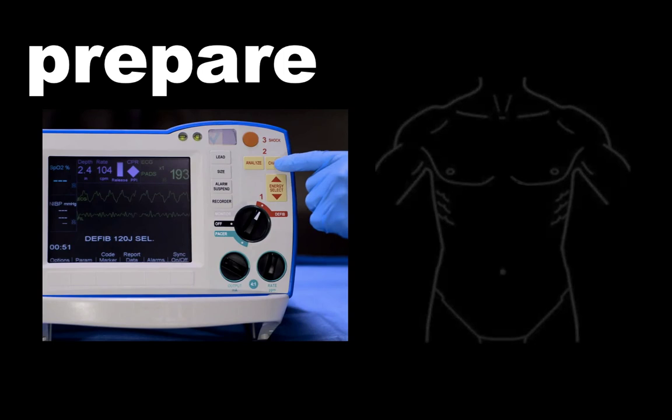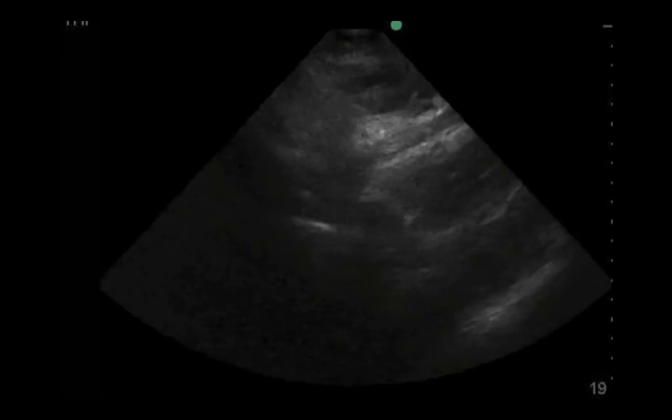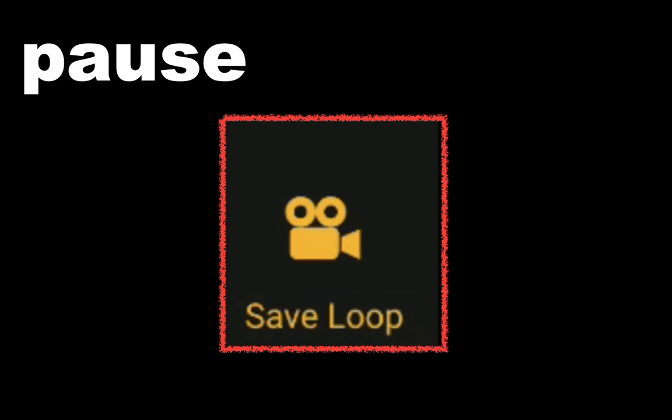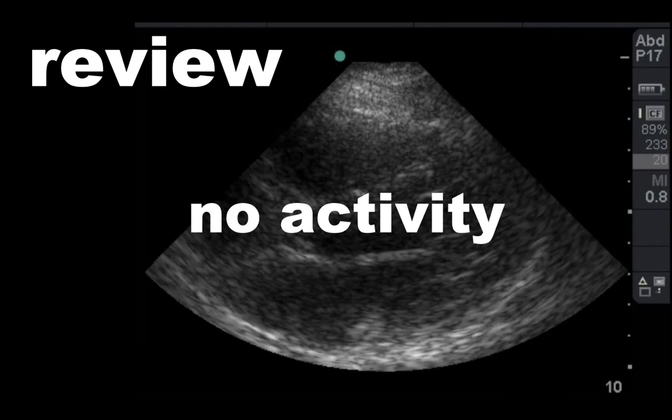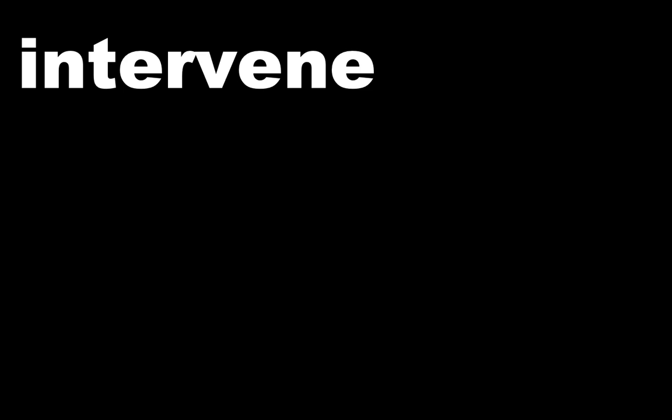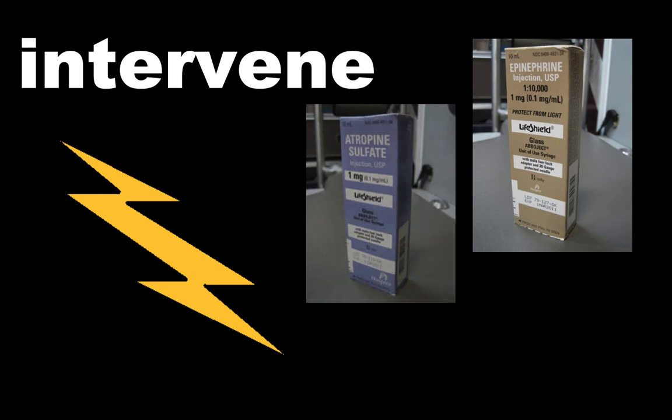So first, prepare — pre-charge your defibrillator and get the probe in either the parasternal or sub-xiphoid views. Once the pulse check happens, click save loop on the machine. Our machines at UW are programmed for 6 seconds, so this is a good timer. Click save loop, then step away and encourage the team to restart compressions. While CPR is ongoing, review the image. This is a case of no cardiac activity, so follow your standard ACLS protocol. If you find the patient has fine VF, go ahead and shock it. Otherwise, manage medically with epinephrine, atropine, or lidocaine as needed.